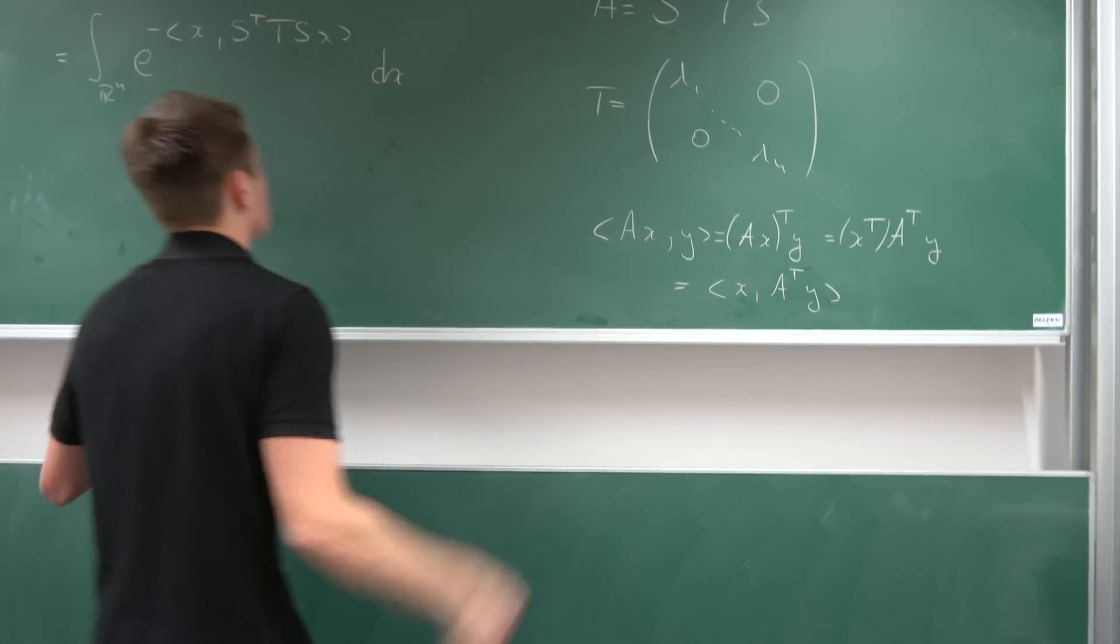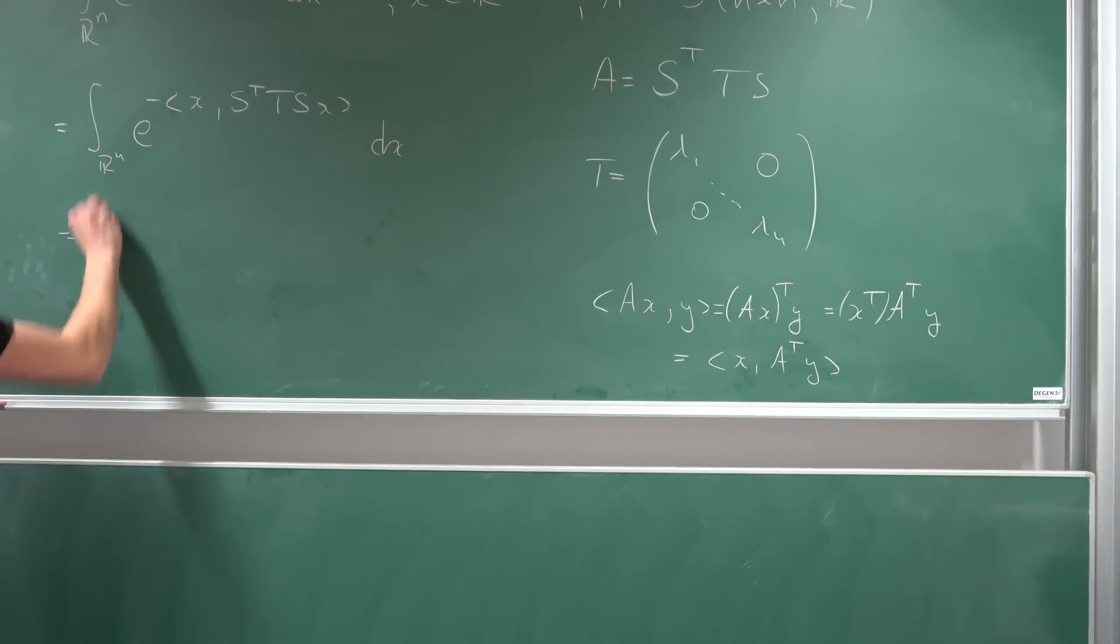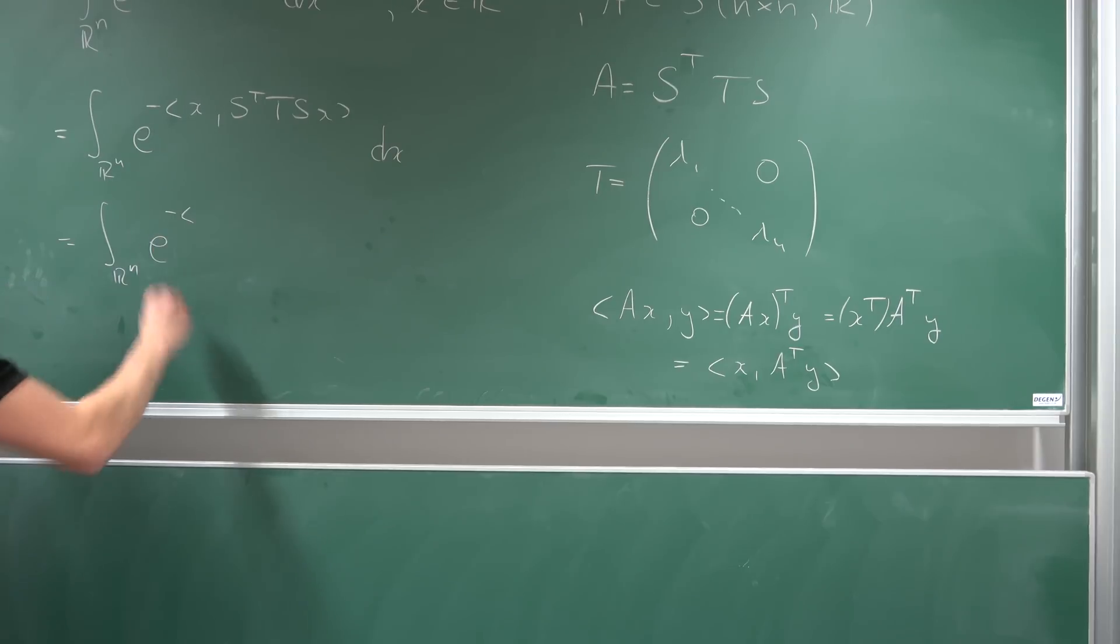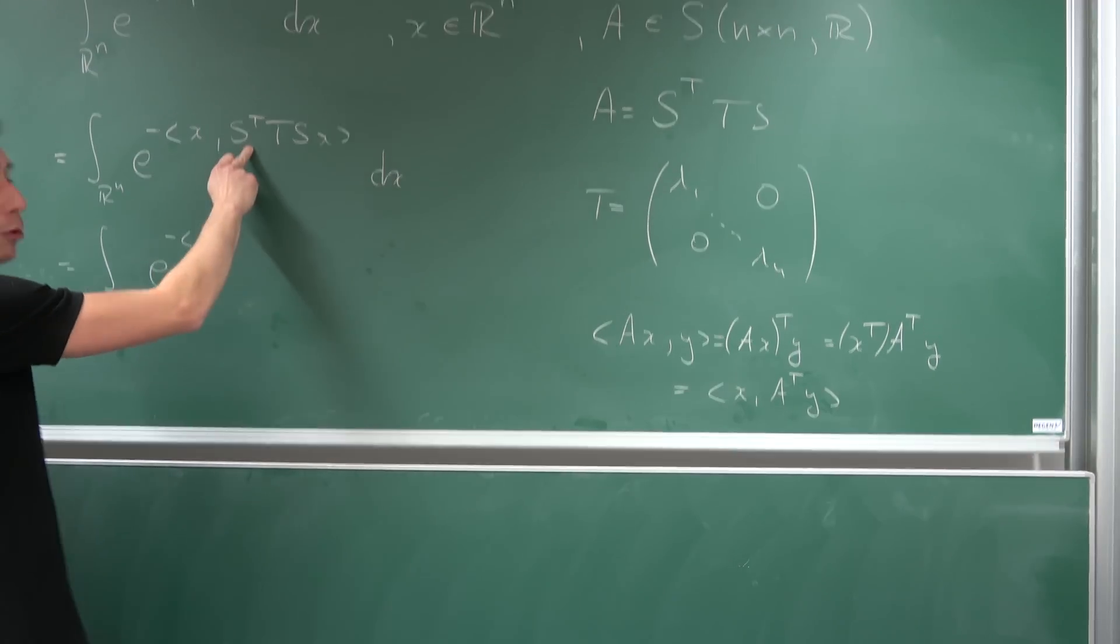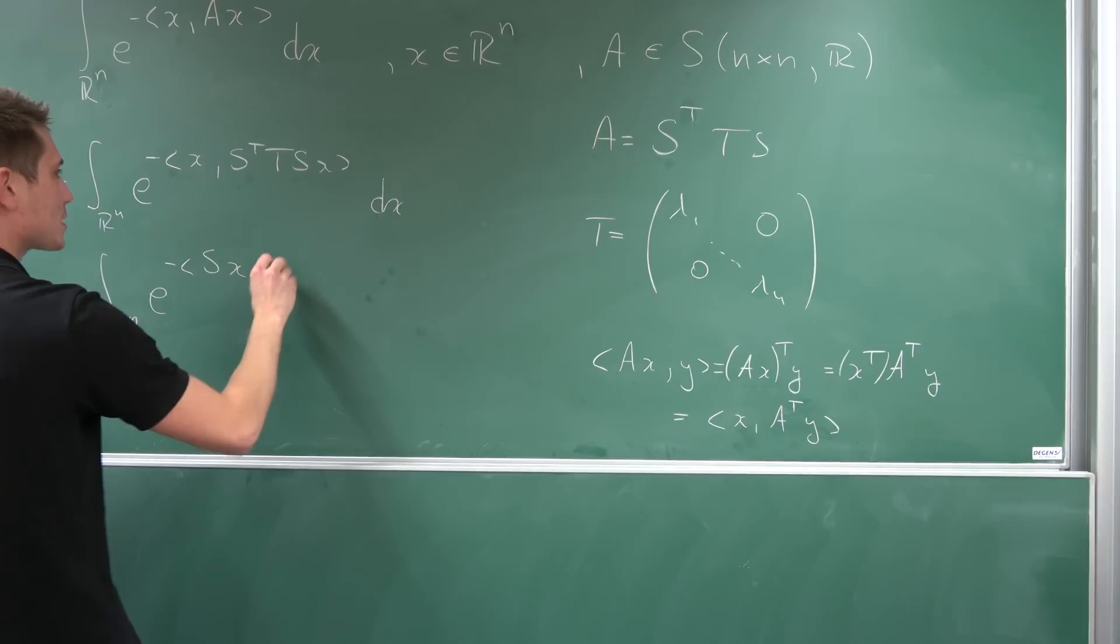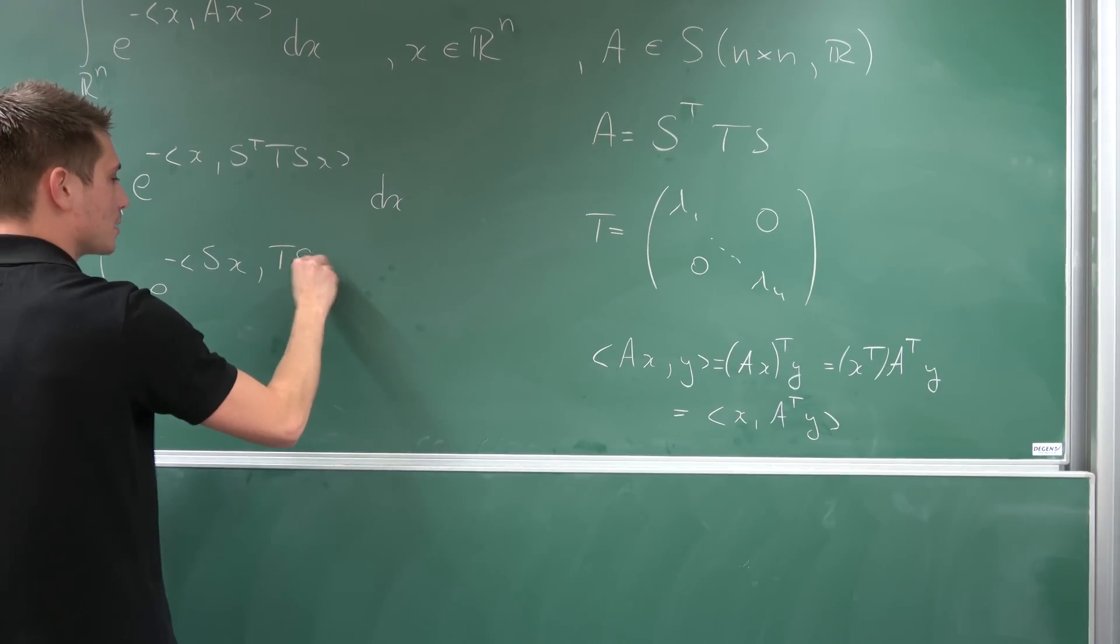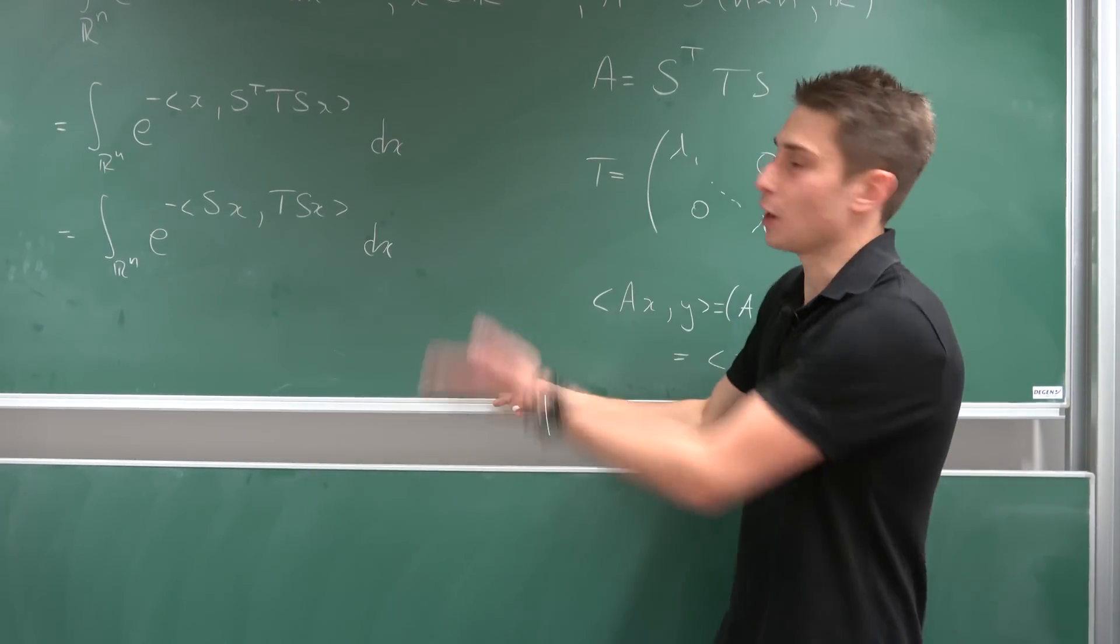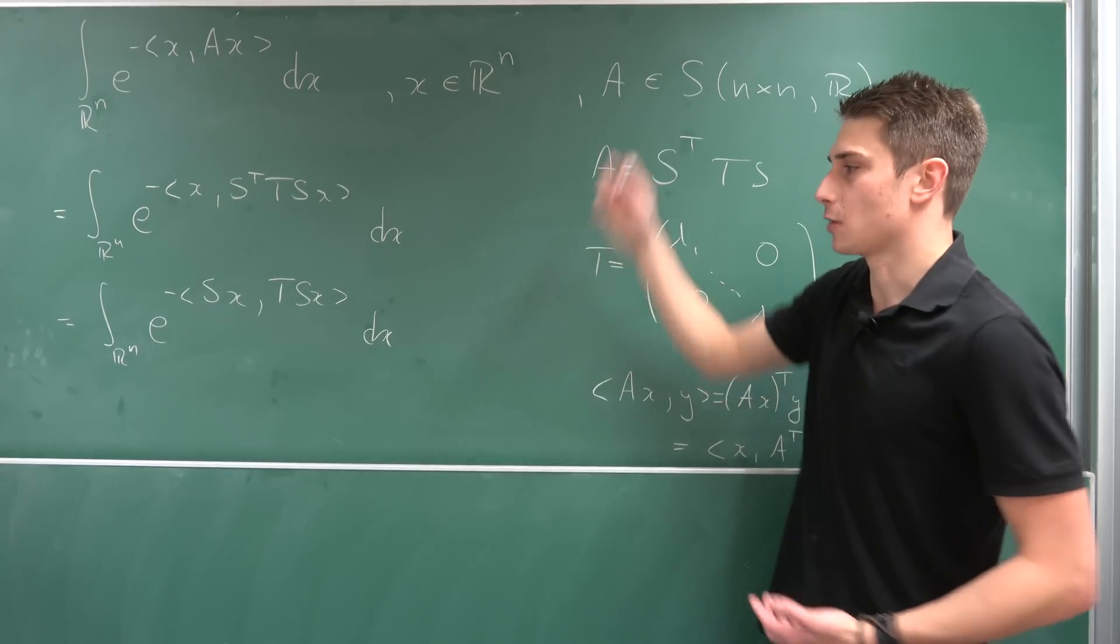We are here at the moment and we want to get here. So meaning, this right here is nothing but an integral over r to the n. And then we have e to the negative inner product of, now putting this s transposed to this side as just s times x comma t s times x, integrated with respect to x. We already came pretty far with all those restrictions placed on a.